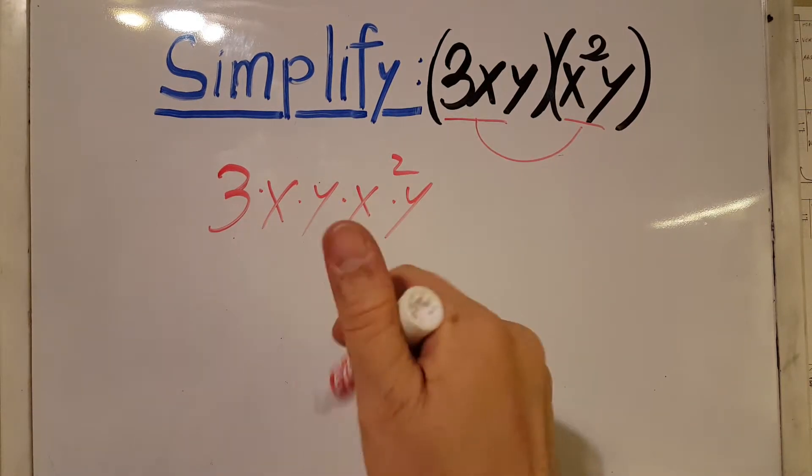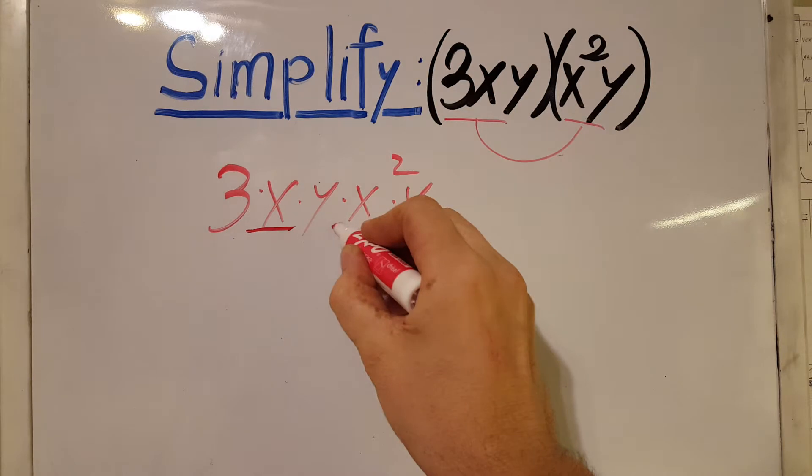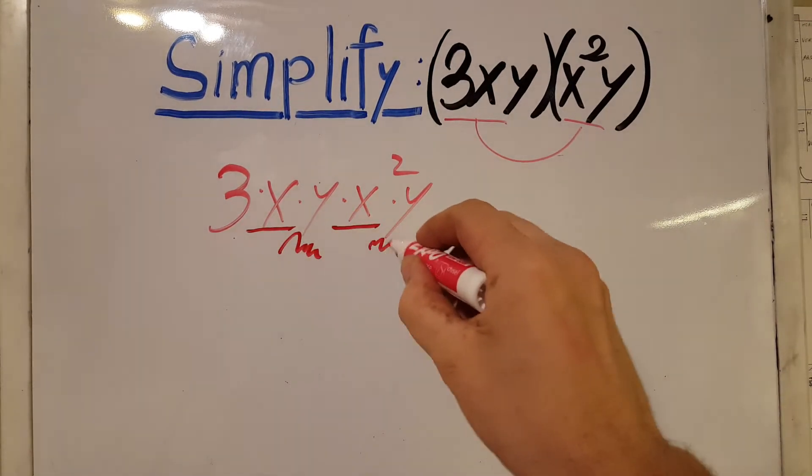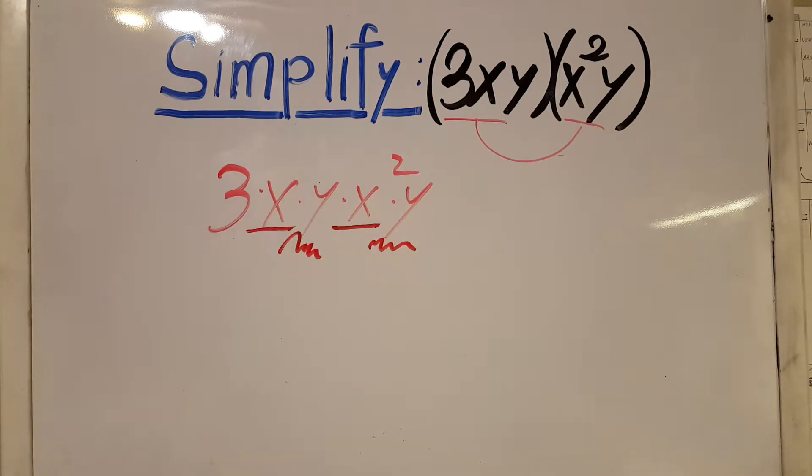We're going to switch the terms in such a way where the like terms, like x and x squared and the y and the y here, we're going to be able to put them next to each other just so we can see them easier.